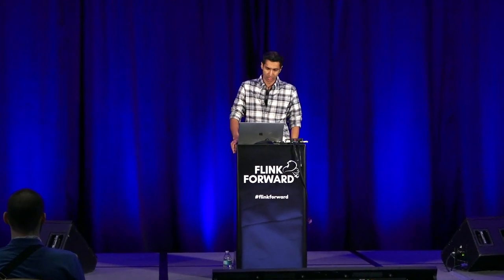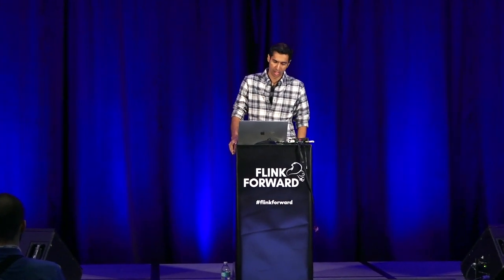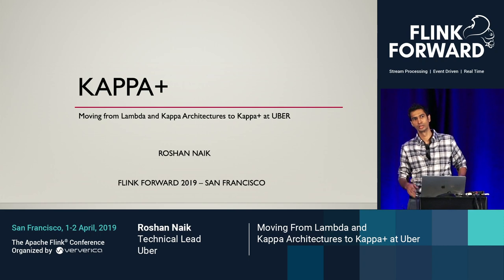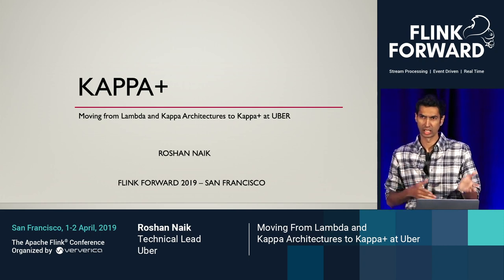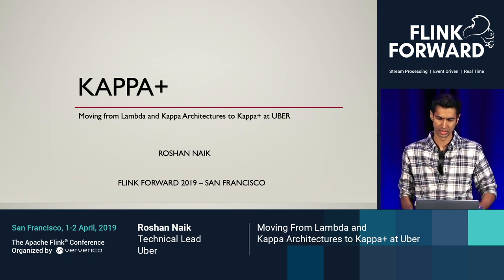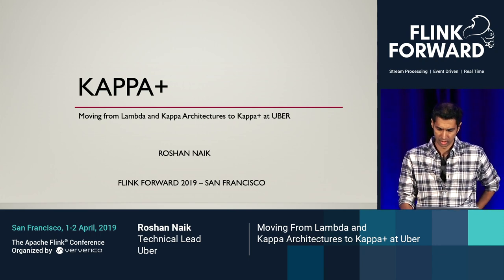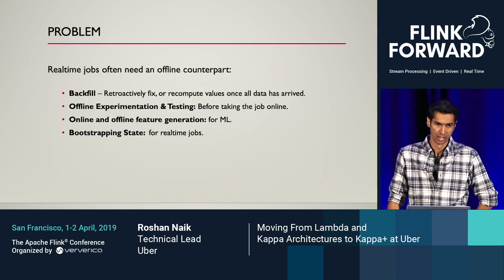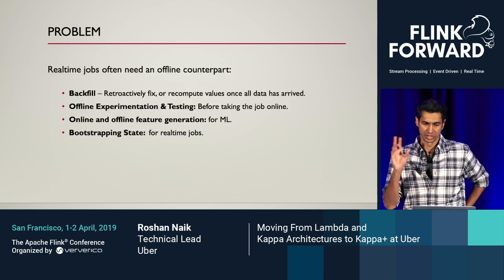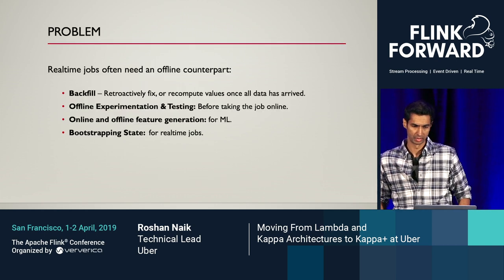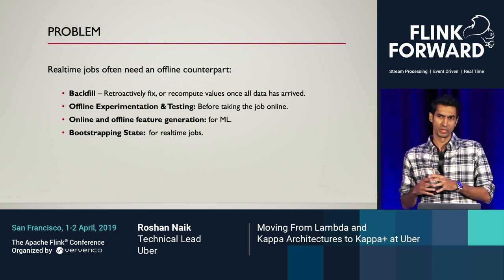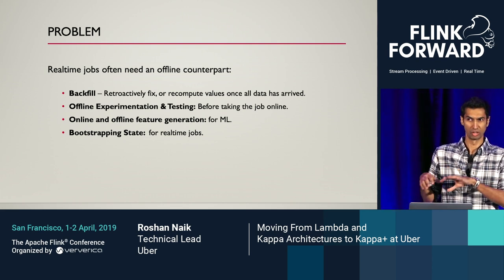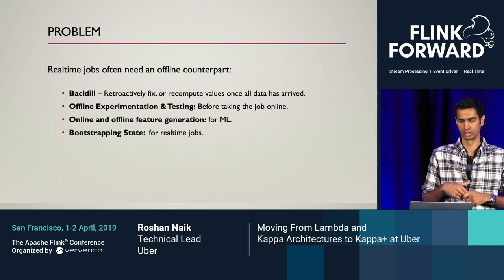I'm here to talk about a new architecture we've been working on at Uber, basically to address some of the issues we've seen with the Lambda and the Kappa architectures in production. The basic problem is whenever you have a real-time job, you often need an offline counterpart to that.